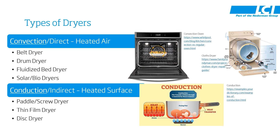There are two main types of dryers. There's a direct dryer, which uses the principle of convection or heated air to evaporate water. And there's an indirect dryer, which uses the principle of conduction or a heated surface to evaporate water.